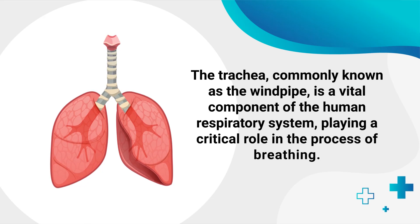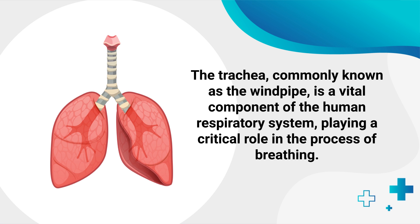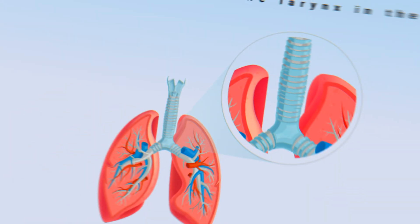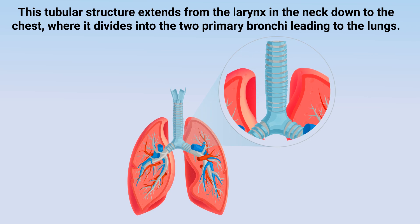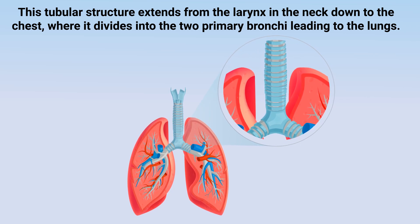The trachea, commonly known as the windpipe, is a vital component of the human respiratory system, playing a critical role in the process of breathing. This tubular structure extends from the larynx in the neck down to the chest, where it divides into two primary bronchi leading to the lungs.